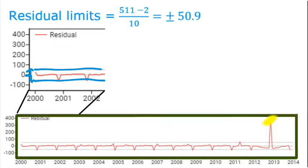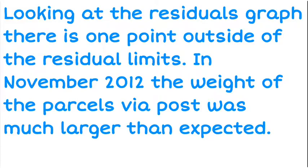So this is what I want to write about. I can say, looking at that residual graph, there's one point outside of the limits. This is November 2012, and the weight of the parcels was much larger than expected. So that's what I want to identify as the fact that it is much larger, because it could have been much smaller than expected. We need to be able to say whether it is more or less than normal.